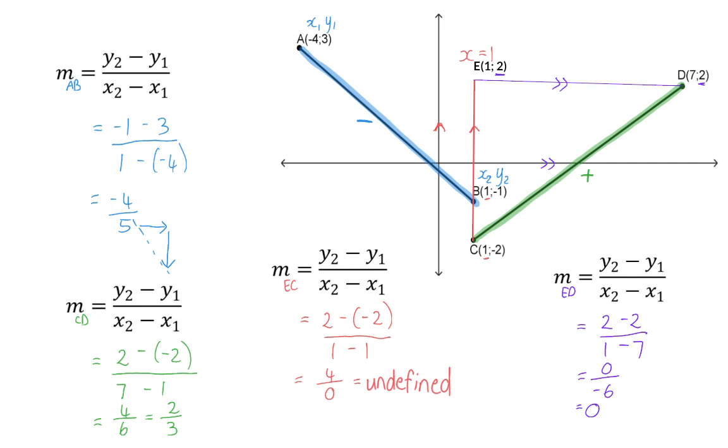So to sum up, we've had a look at four different types of gradients. Firstly, for an increasing line moving up to the right, the gradient is positive. A decreasing line will always have a negative gradient, and a horizontal line will have a gradient of 0. The gradient of a vertical line is undefined.